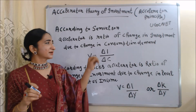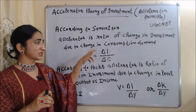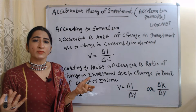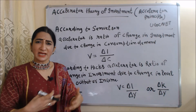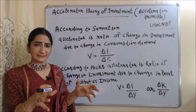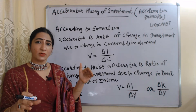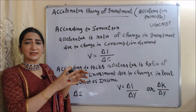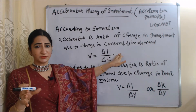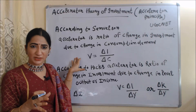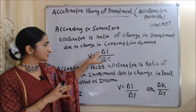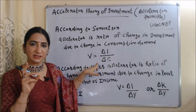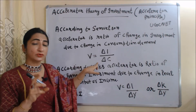According to Samuelson, the accelerator is the ratio of change in investment due to change in consumption demand. Samuelson's accelerator mainly tells us how much investment changes due to change in consumption demand. The formula for calculating investment according to Samuelson is: v = ΔI / ΔC, where ΔI is change in investment and ΔC is change in consumption.